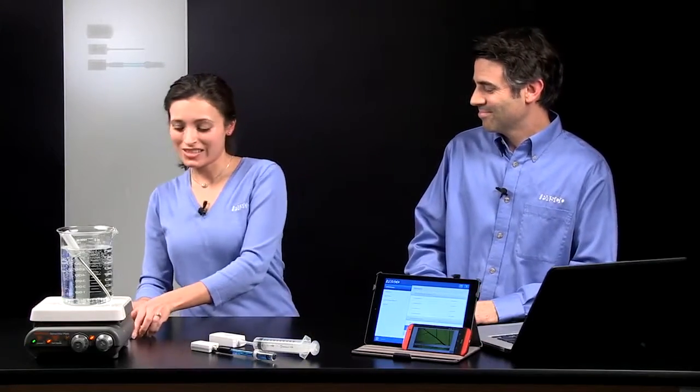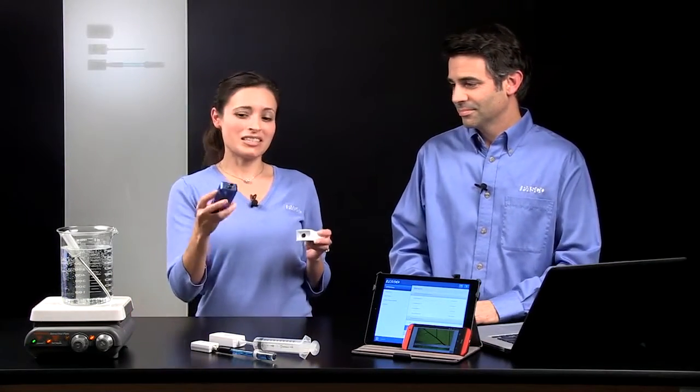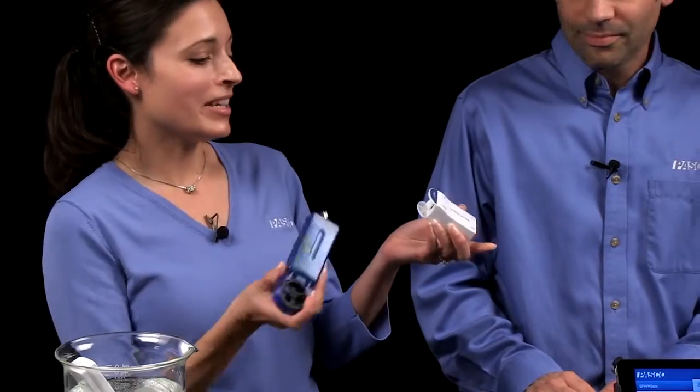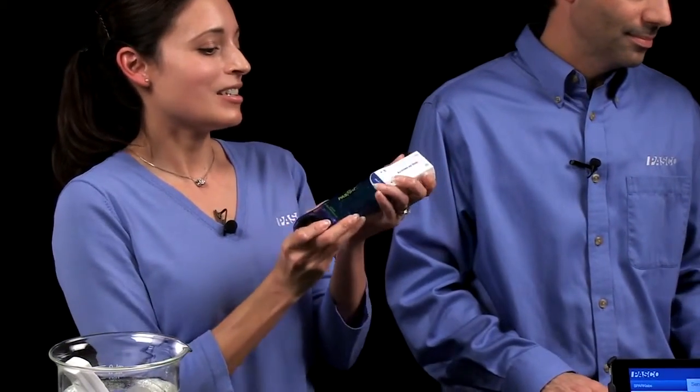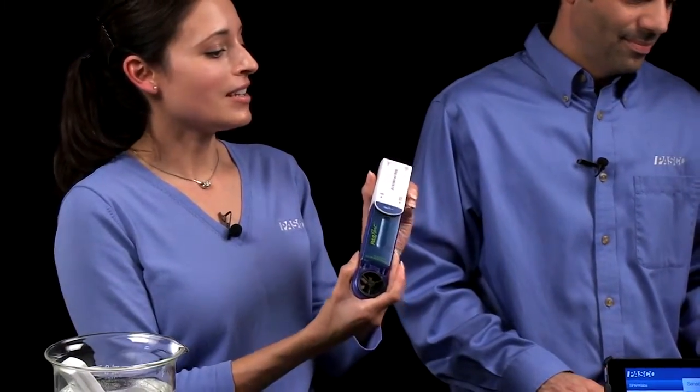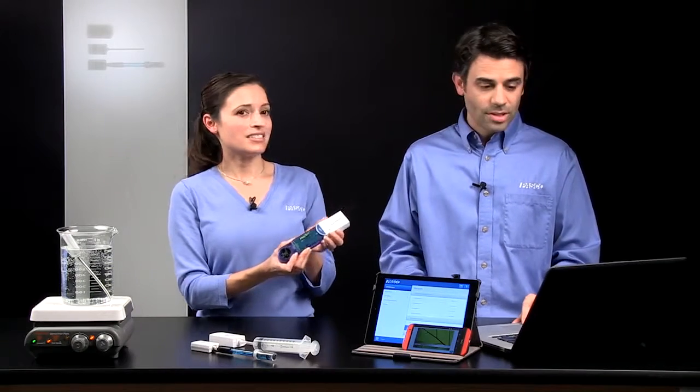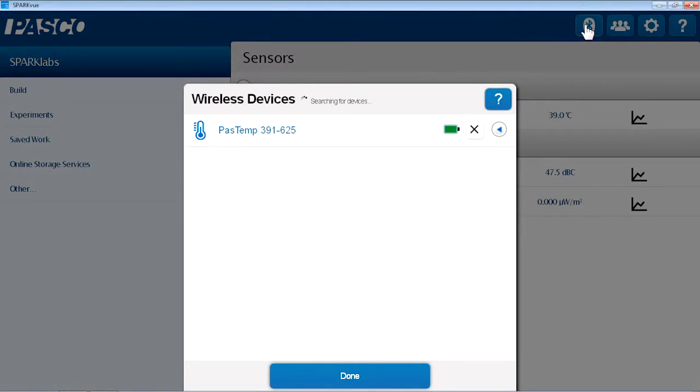And for your sensors that you already have, you can connect an existing passport sensor to an Air Link and make it a wireless connection. Let me turn on the Air Link. And once that's on, just like I did before, I'll connect via that Bluetooth icon. And now I see the Air Link in my device list.